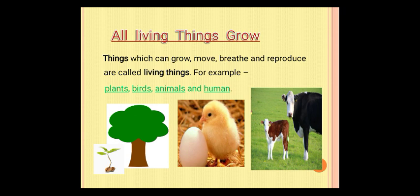Reproduce se mein aapko bataunga ki jaise ek seed hoota hai, woh ek baby plant mein convert hoota hai. Seed se ek baby plant banta hai, baby plant se ek big plant banta hai, and big plant se ek tree banta hai. Agar aap bird ki baat karo, toh bird jo hai woh egg se banta hai. Pehle ek egg hoota hai, egg hatch karta hai, tootta hai, aur uske andar se ek bird nikalta hai. Aisi save as it is animals ke bhi hoota hai. Toh woh saari cheezein jo grow, move, breathe aur reproduce kar sakti hai, unhey hi hum living things keetay hai.